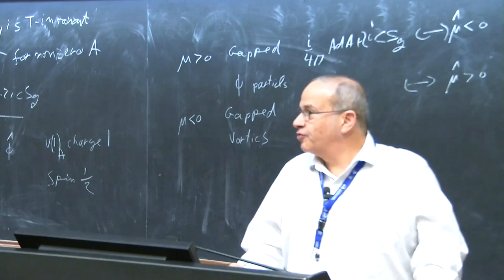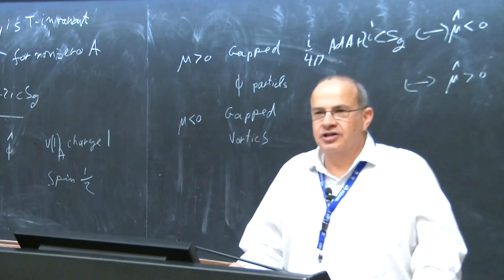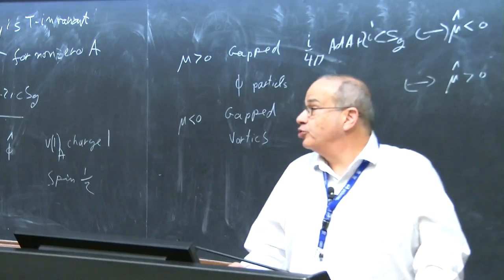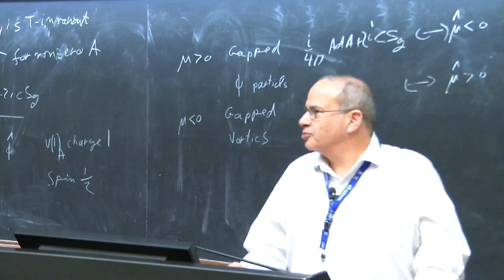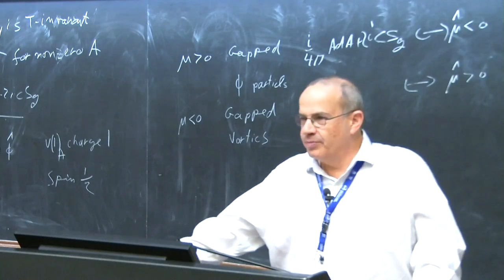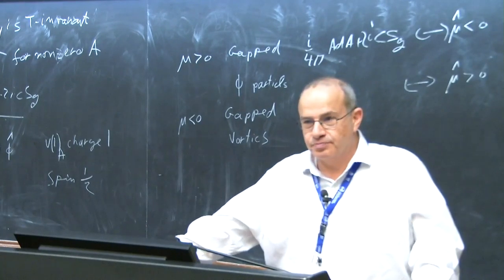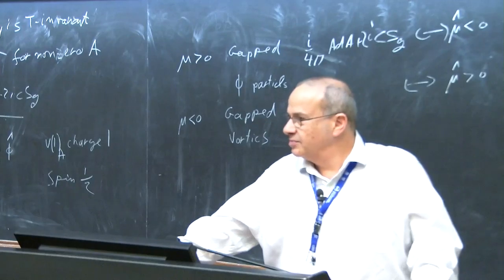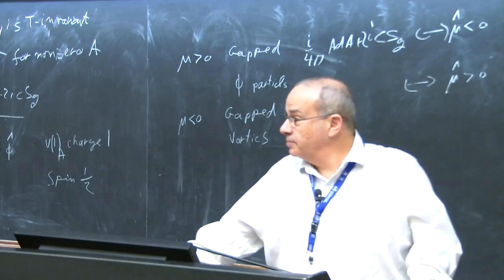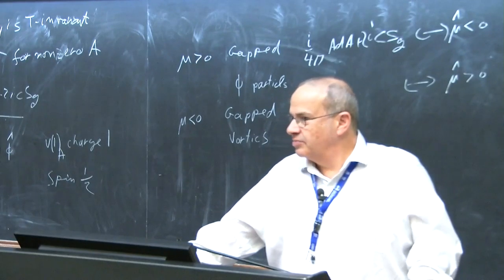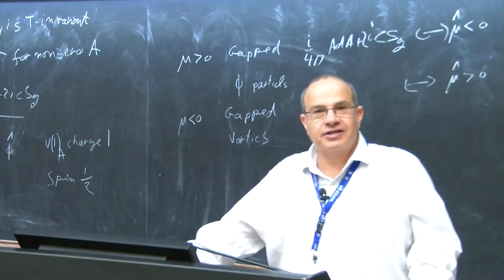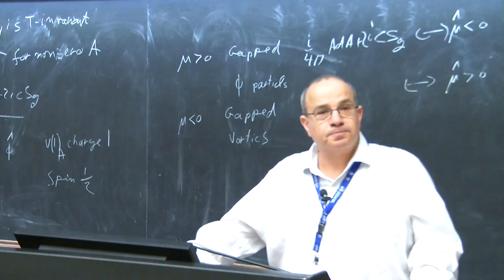This is bosonization — or fermionization — in three dimensions. It's known to be possible in two dimensions, and here we do it in three dimensions. I emphasize that's an assumption, but for the rest of these lectures I'll continue to make it: I'll assume this duality is true.